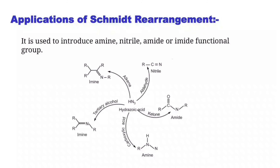Applications of Schmidt Rearrangement: It is used to introduce amine, nitrile, amide, or imide functional groups. Hydrazoic acid reacted with an alkene forms amine; with a tertiary alcohol forms amine; with a carboxylic acid forms amine; with a ketone forms amide; and with an aldehyde forms nitrile.